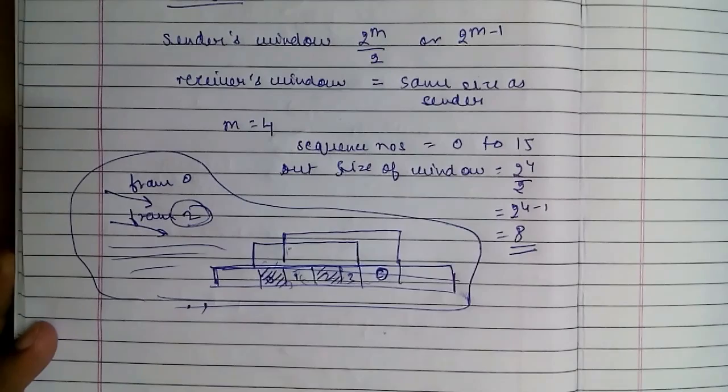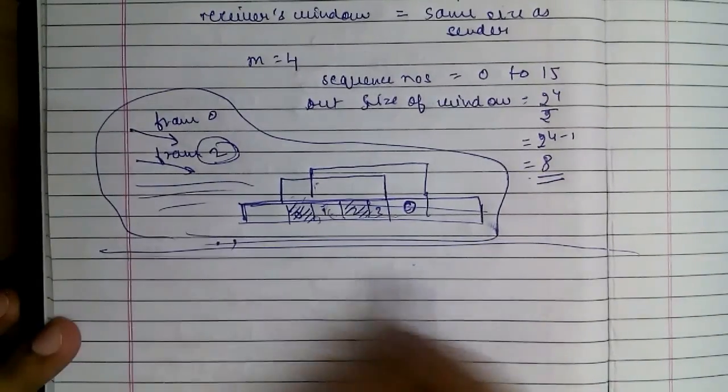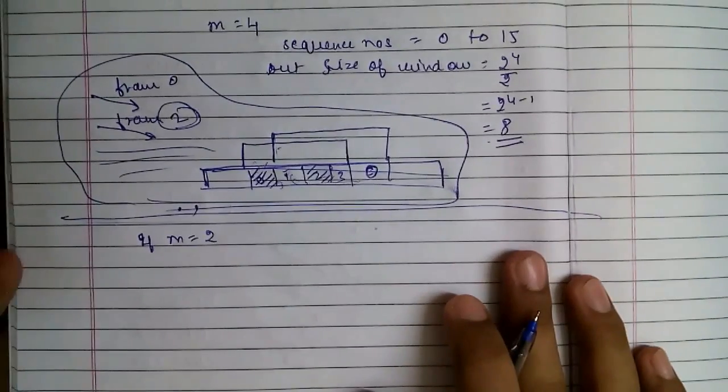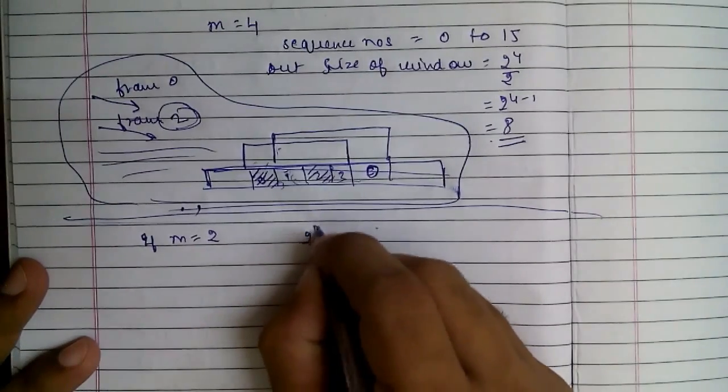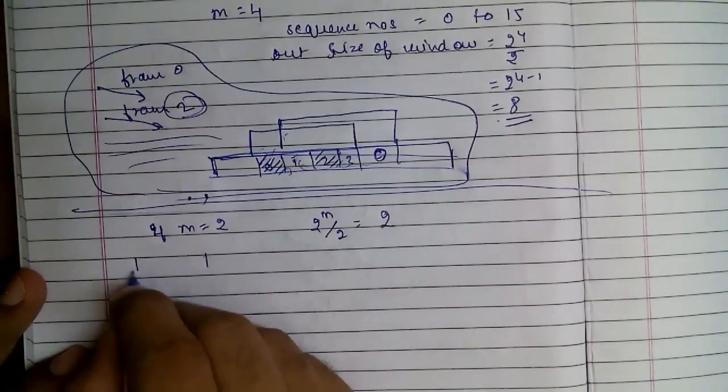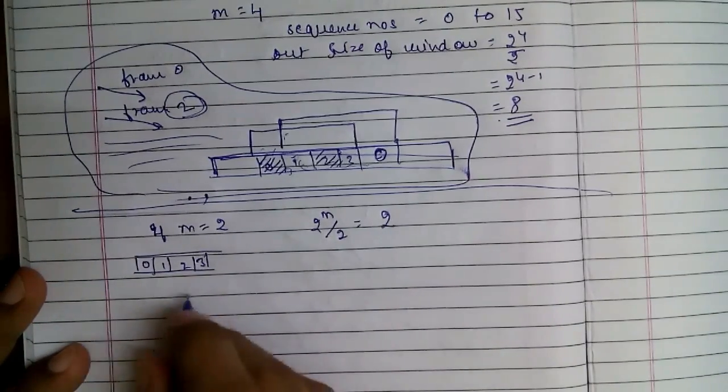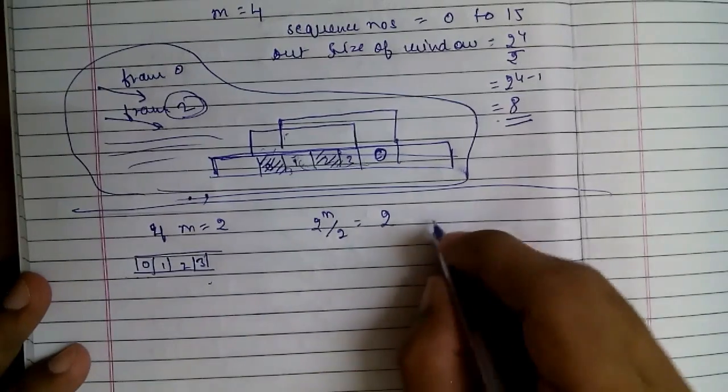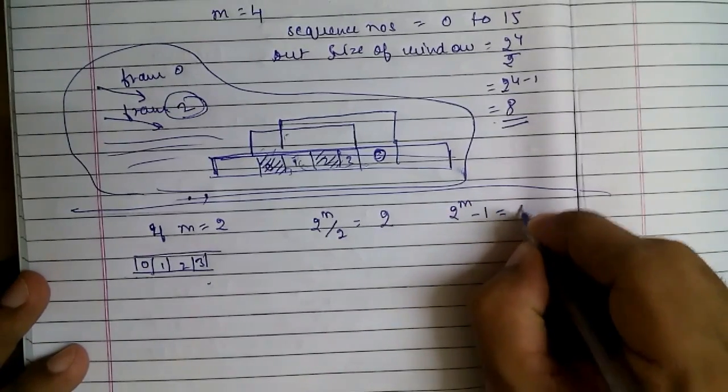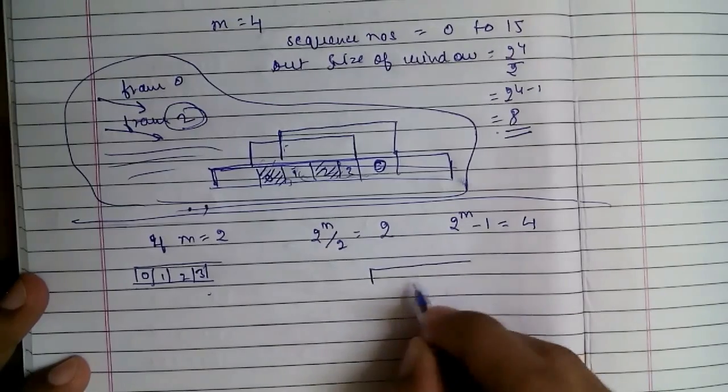And to explain why the size of the window should be 2 raised to M by 2, let's take another example. Say if M equal to 2, so the size of the window allowed is 2 raised to M by 2 equals to 2. Say this is the sender side. The sequence will range from 0 to 3, as the sequence is 2 raised to M minus 1, which is 4. And this is the receiver side.